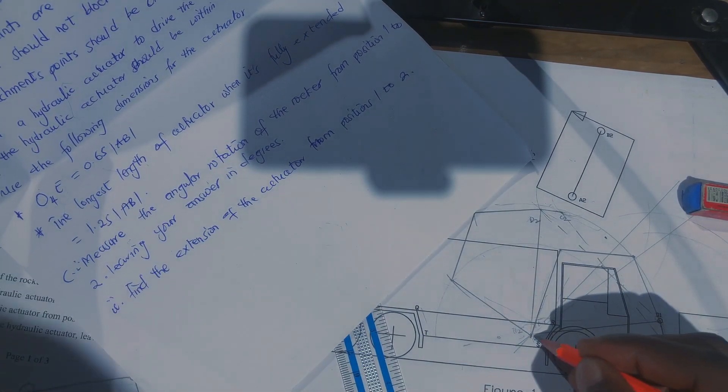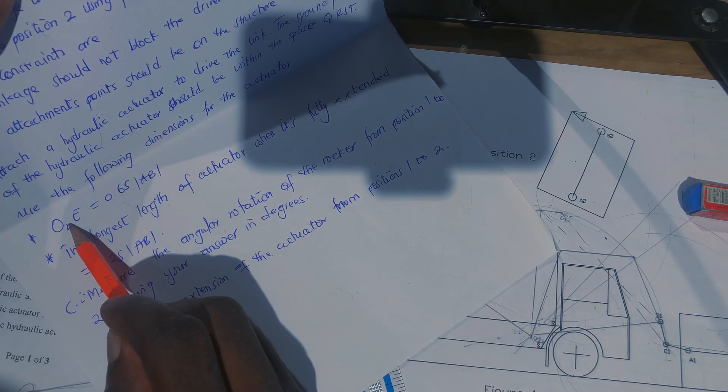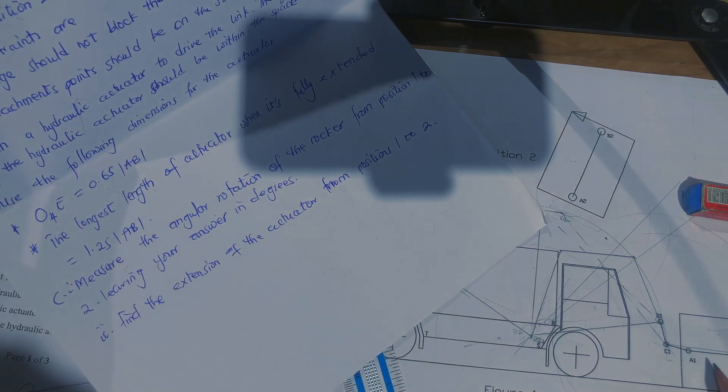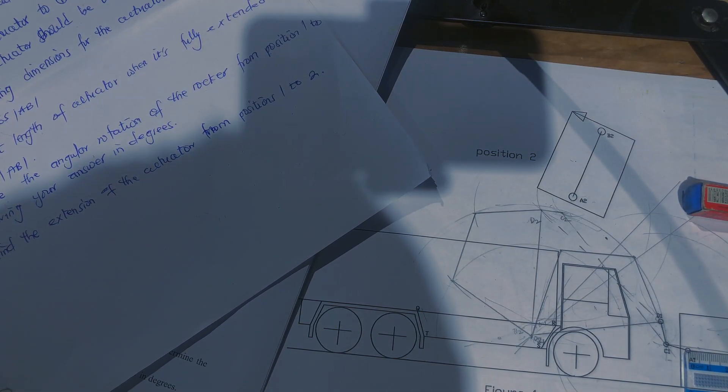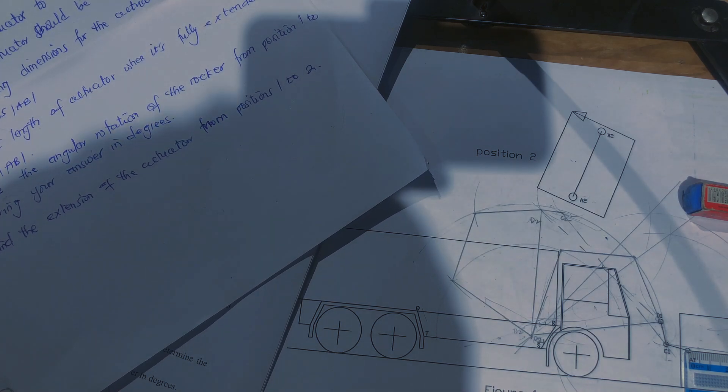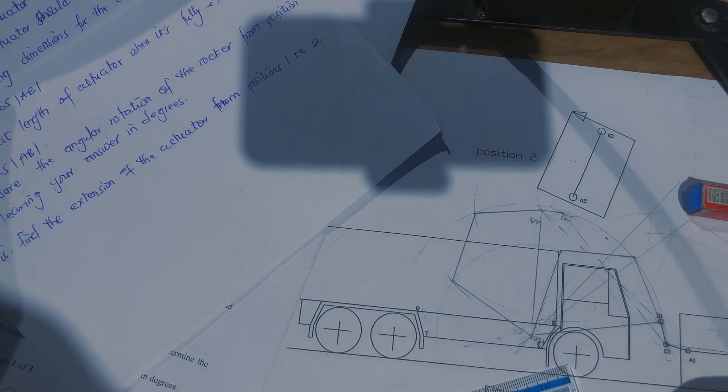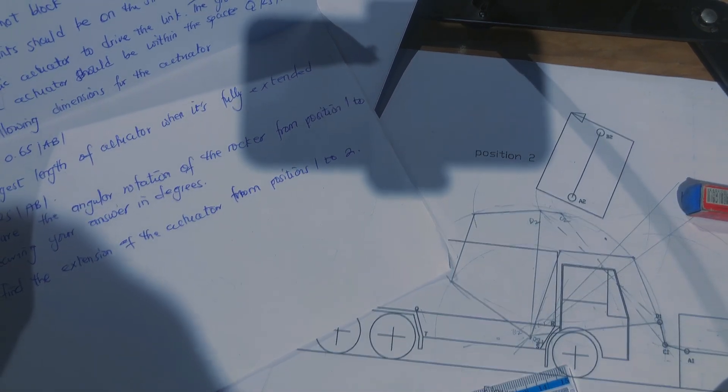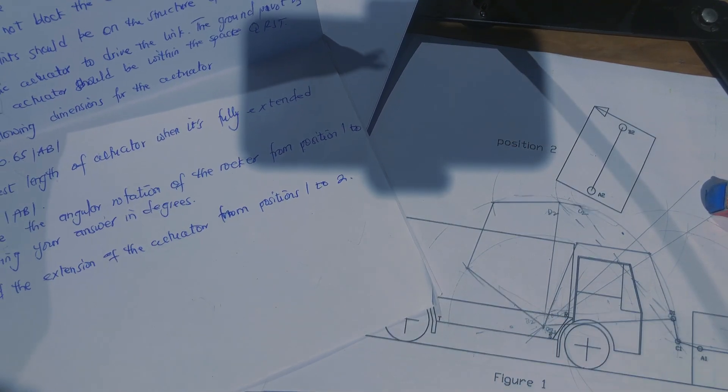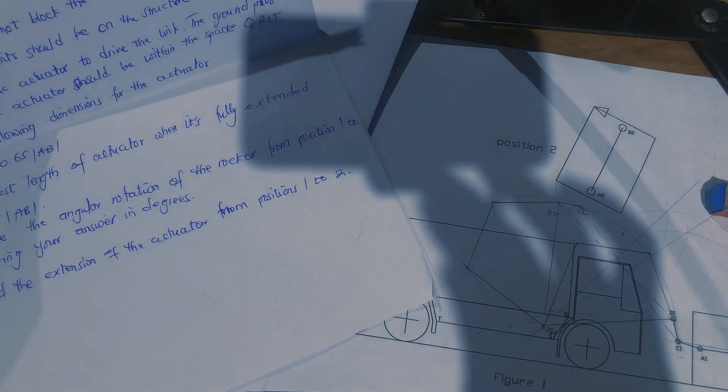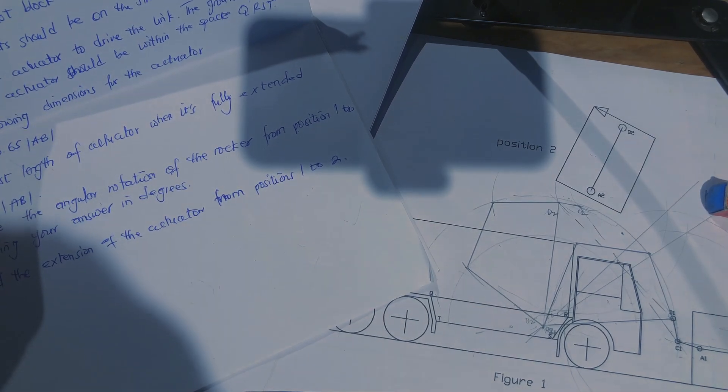Label the fixed point as O4. Then the point of attachment of the hydraulic actuator should be 0.65 times the length of link AB. So you measure the length of link AB, which is four centimeters. Four centimeters times 0.65, that will be the distance you take from here to here. What are you getting? 2.6.